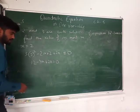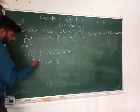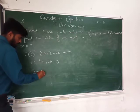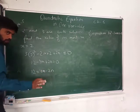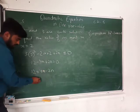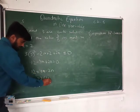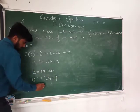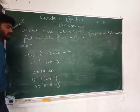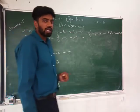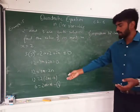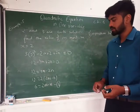Shifting terms, I get 12 = 4M minus 2N. Taking 2 as common: 6 = 2M minus N. This is my first equation: 2M minus N = 6.